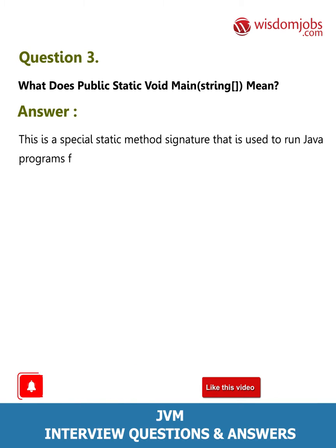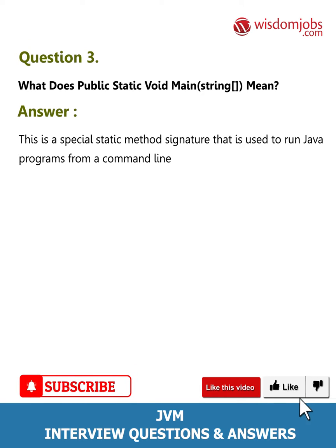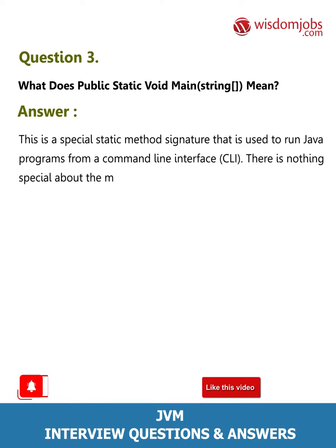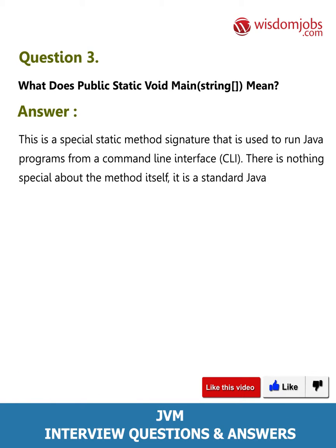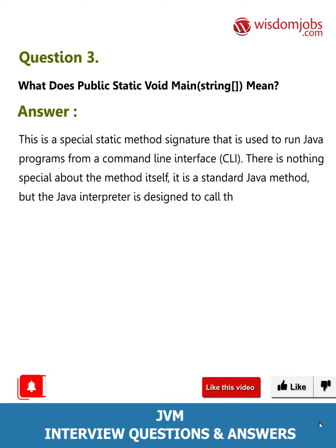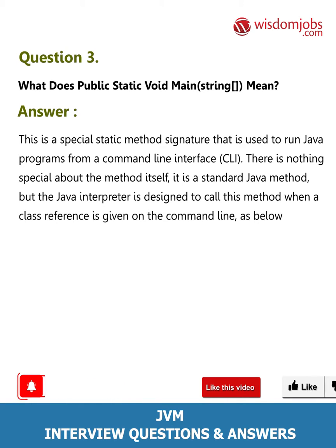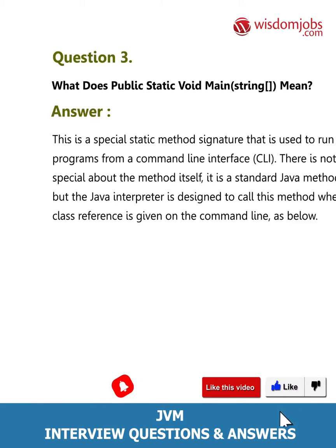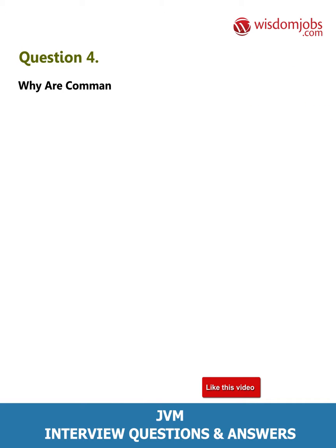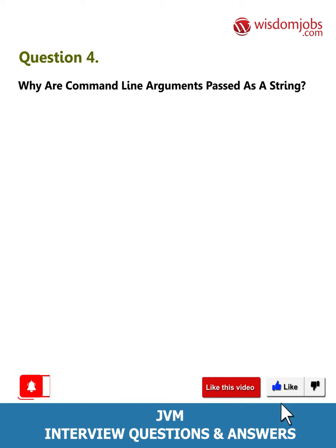Question 3: What does 'public static void main String' mean? Answer: This is a special static method signature used to run Java programs from a command line interface (CLI). There is nothing special about the method itself — it is a standard Java method — but the Java interpreter is designed to call this method when a class reference is given on the command line.